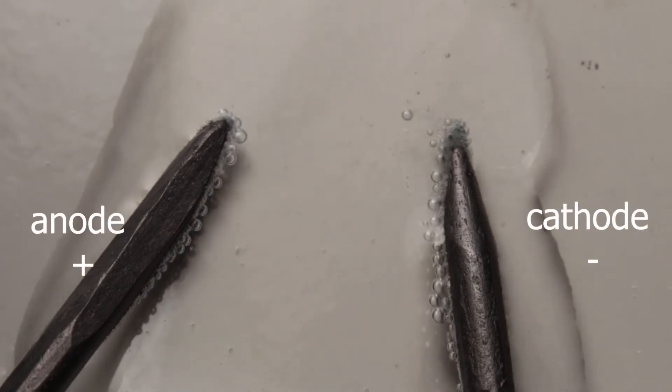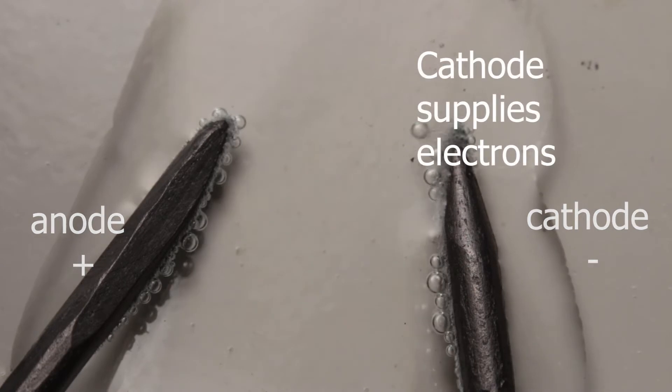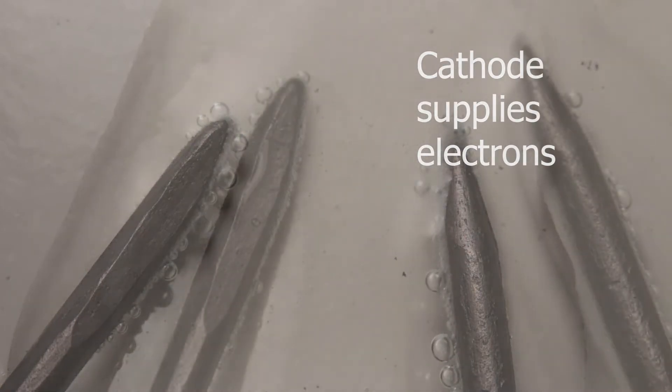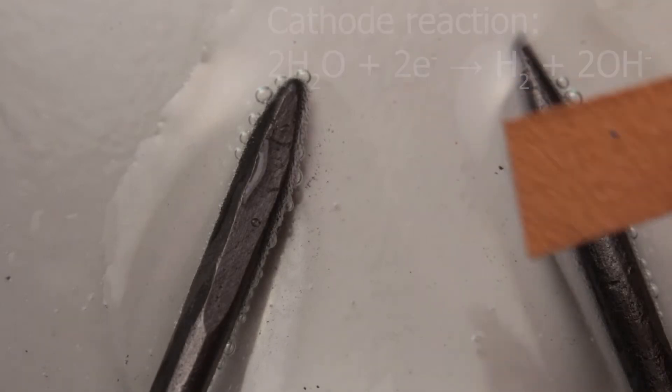You can see as I switch on the current, formation of gases on these two electrodes. Which gases are those? And maybe there are other products.